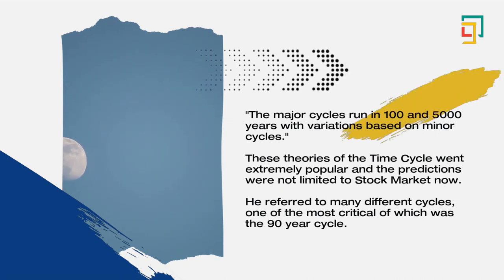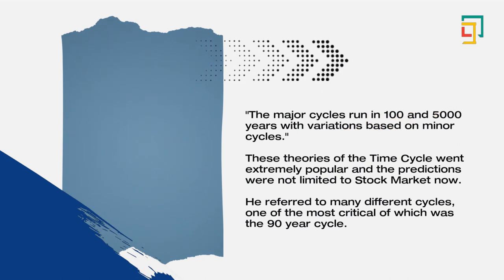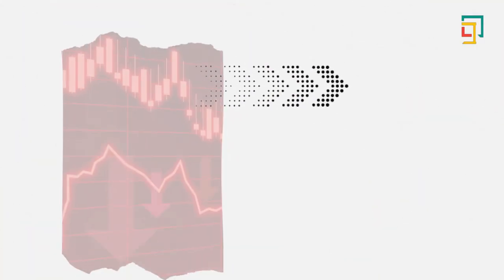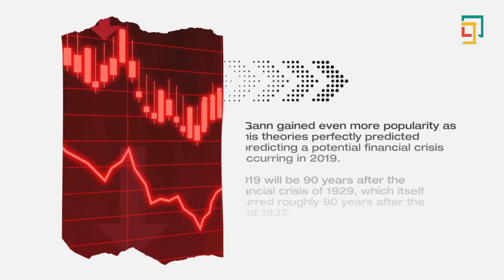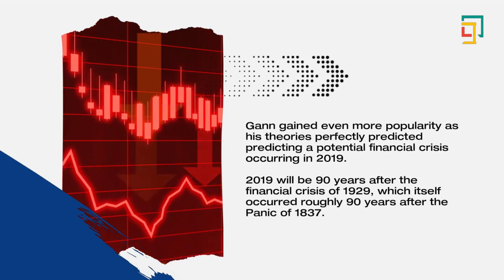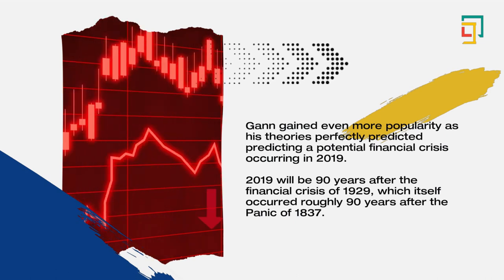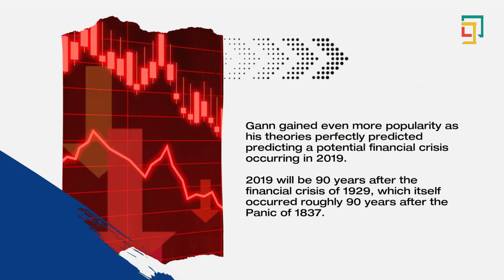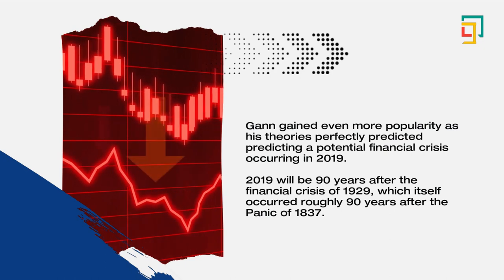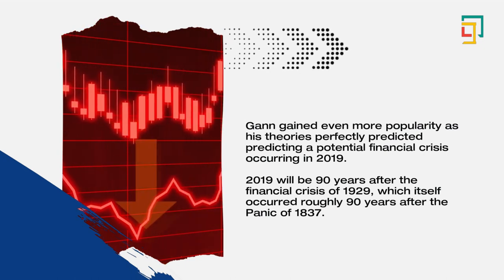These theories of the time cycle went extremely popular and the predictions were not limited to stock market now. He referred to many different cycles, one of the most critical of which was the 90-year cycle. Gann gained even more popularity as his theories perfectly predicted a potential financial crisis occurring in 2019. 2019 will be 90 years after the financial crisis of 1929, which itself occurred roughly 90 years after the Panic of 1837.